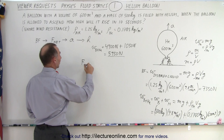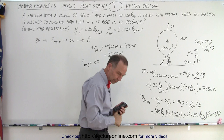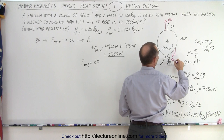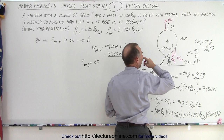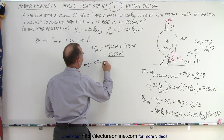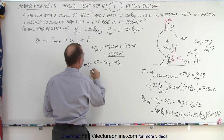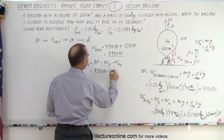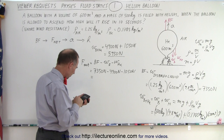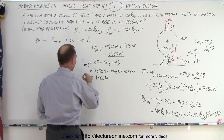The net force will be the buoyancy force minus the weight of the balloon minus the weight of the helium. The buoyancy force pushes the balloon upward, while the weight of the balloon and the weight of the helium pull it downward. Since buoyancy is greater, the balloon accelerates upward. So F_net equals 7,350 newtons minus 4,900 newtons minus 1,050 newtons, which equals 7,350 minus 5,950, giving a net force of 1,400 newtons.